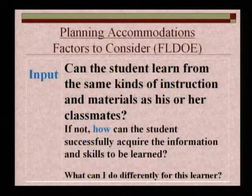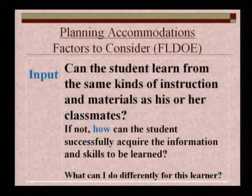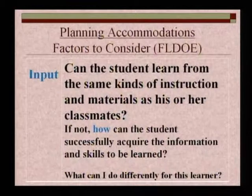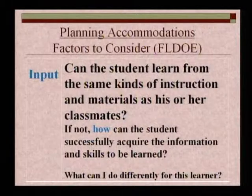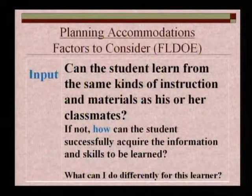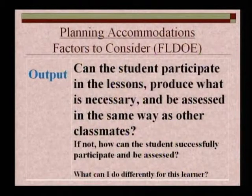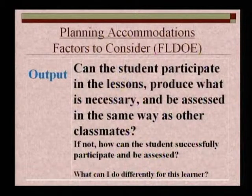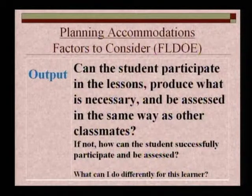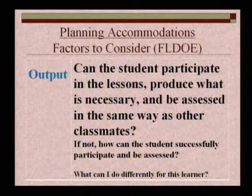When planning instruction, accommodations, or differentiating activities, we need to look at the input: Can the student learn from the same kinds of instruction and materials as his or her classmates — thinking about struggling learners, students with disabilities, and children who are not English proficient? If not, how can the student successfully acquire the information and skills to be learned? Then we need to look at the output: Can the student participate in lessons, produce what is necessary, and be assessed in the same way as other classmates? If not, how can the student successfully participate and be assessed?